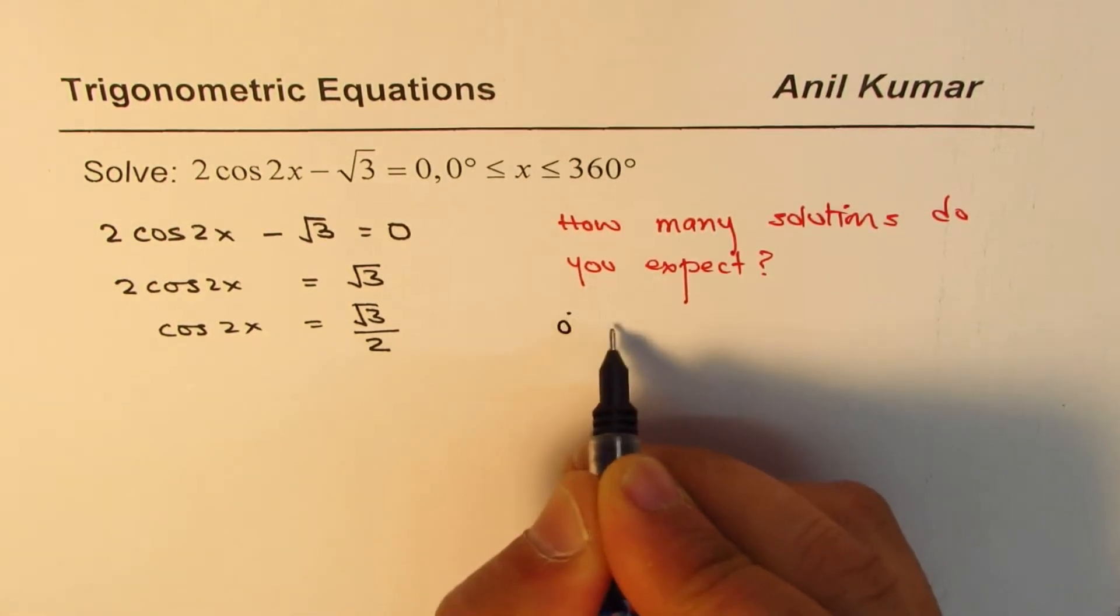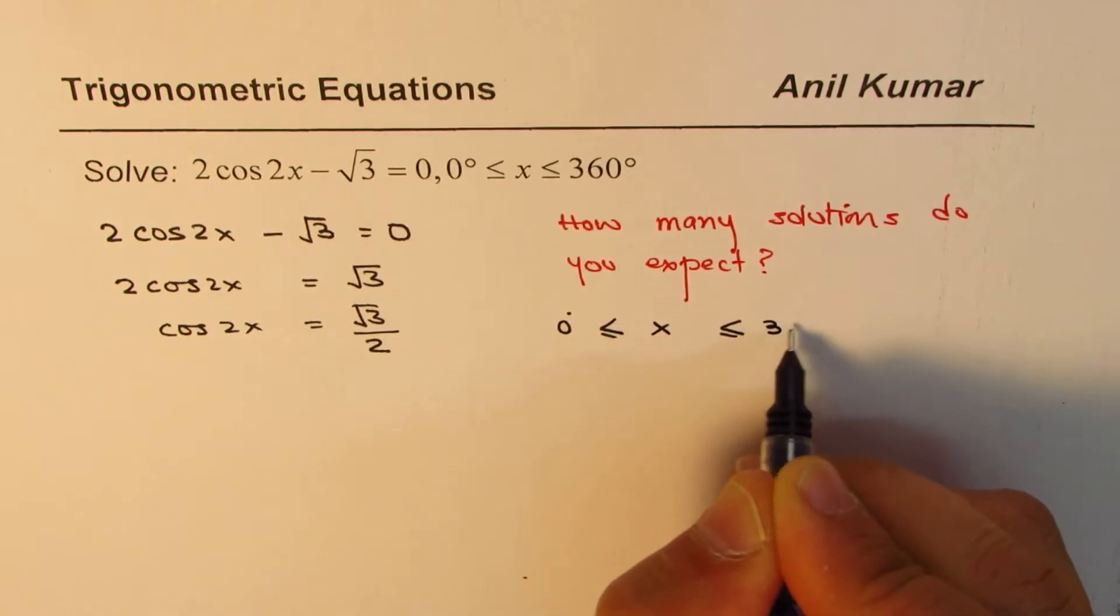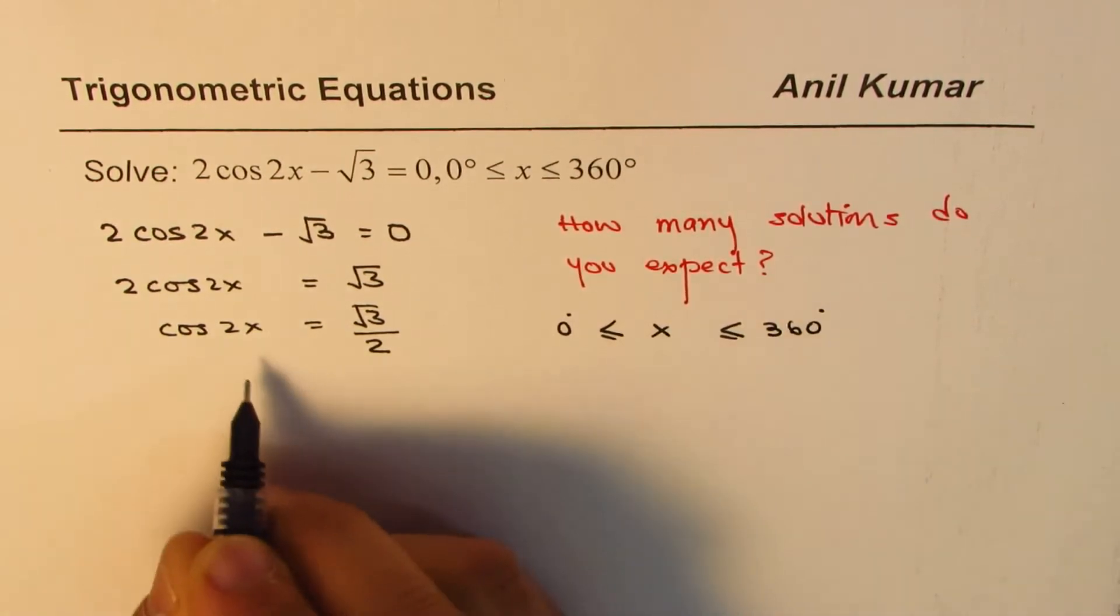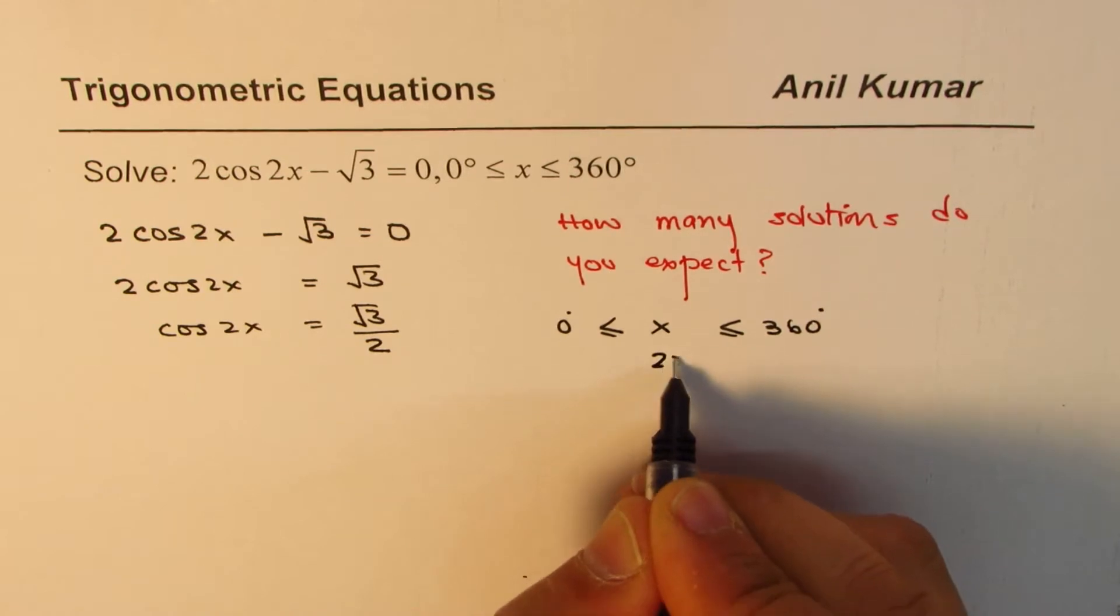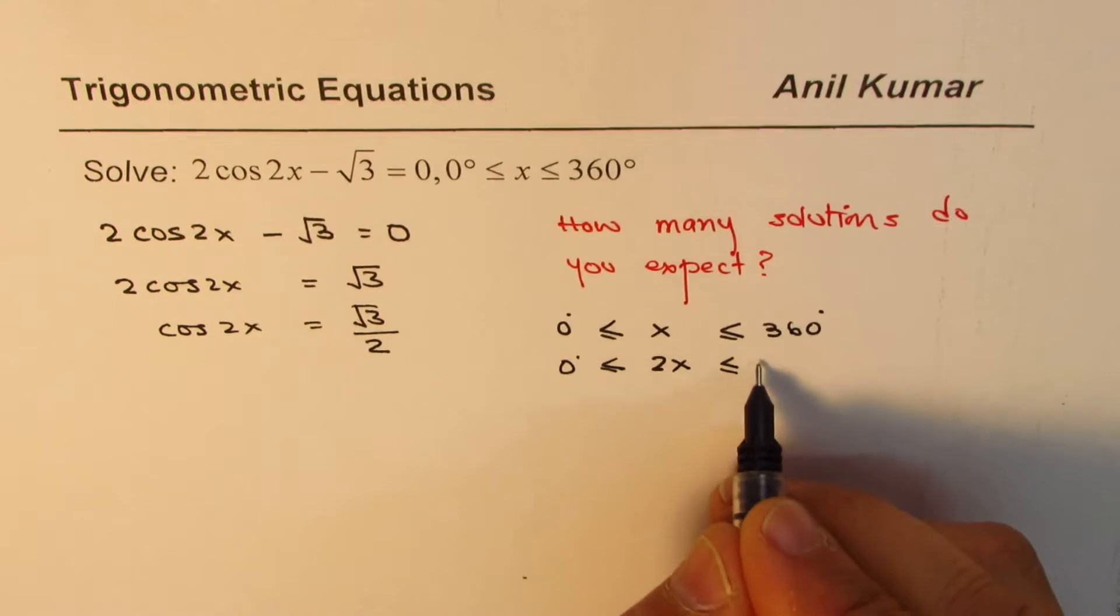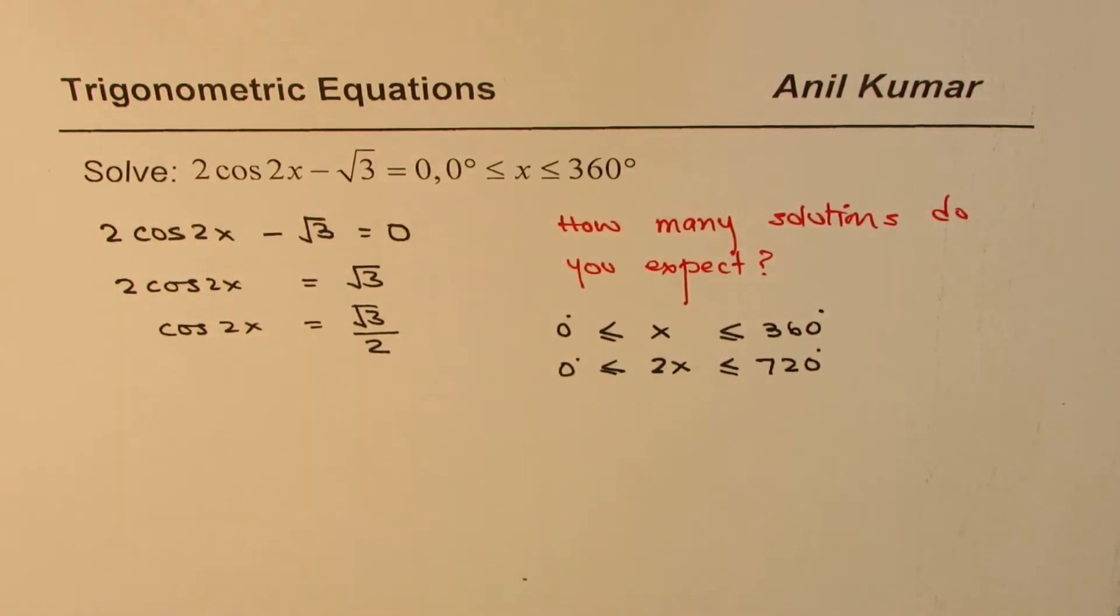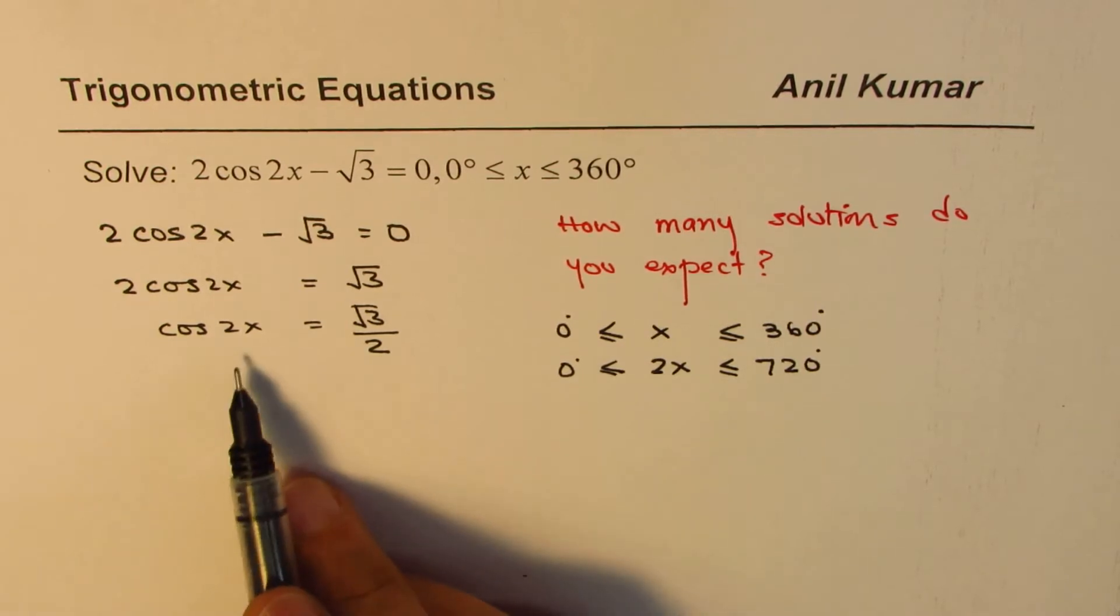The domain is 0 degrees to 360 degrees for x. If I multiply this by 2 I get 2x. Then for 2x the domain will be from 0 to 720 degrees. Do you see that? So we have a bigger domain for cos 2x.